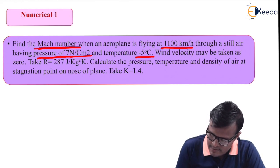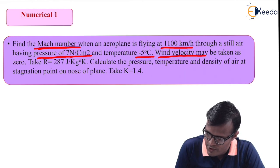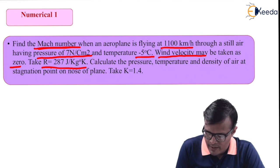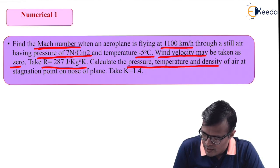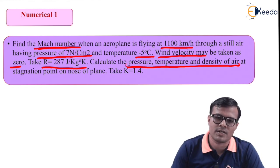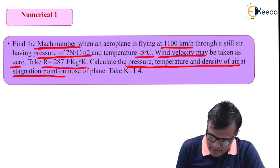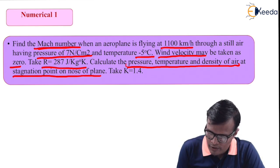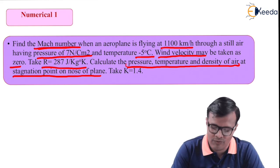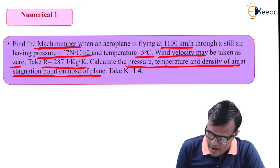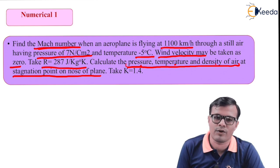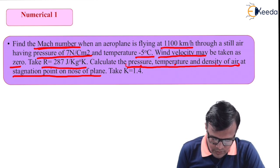Wind velocity may be taken as 0, so the velocity of wind is considered zero. Take R equal to 287 as usual. Calculate pressure, temperature, and density of air — these three are the stagnation properties at the stagnation point on the nose of the plane. At that location we have to calculate pressure, temperature, density, and Mach number — so total four quantities.